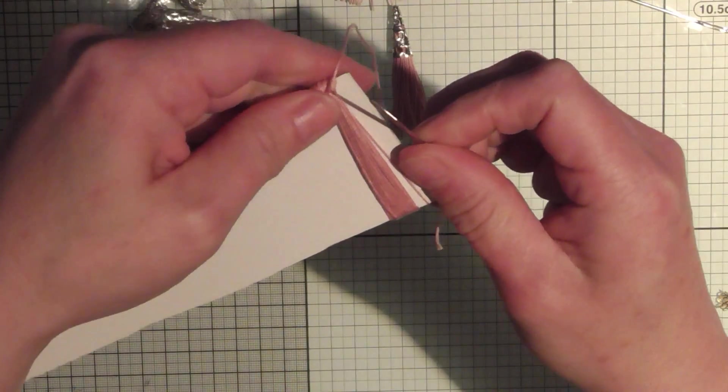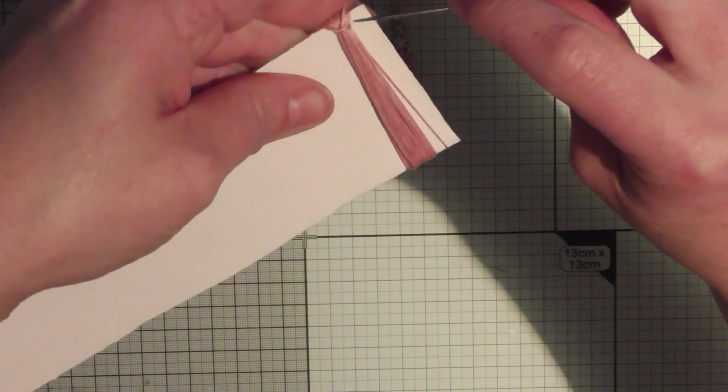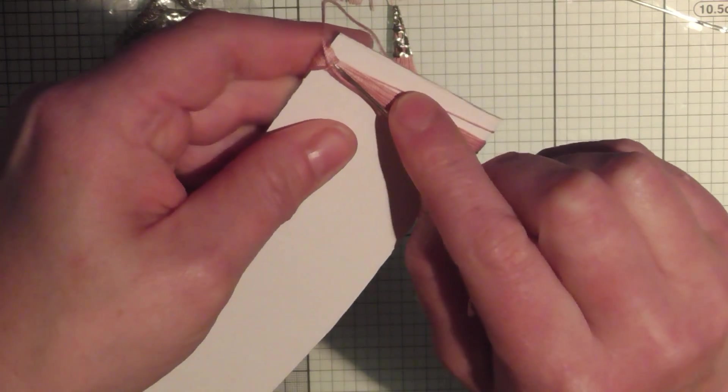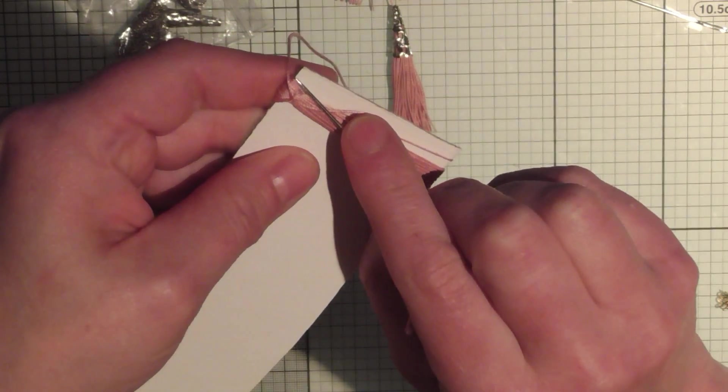And then do it again. Go through all of those, pull it through, find your loop, put your needle inside the loop and pull. Okay, now it will look like it's not on the top because, you know, it will be just there if you can see. It doesn't matter if it's not exactly on the top, that doesn't matter.